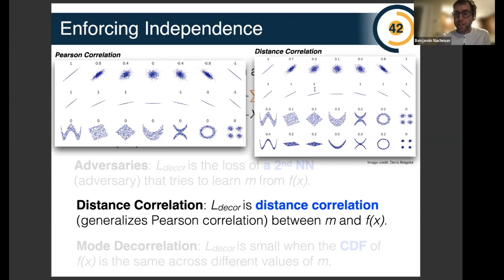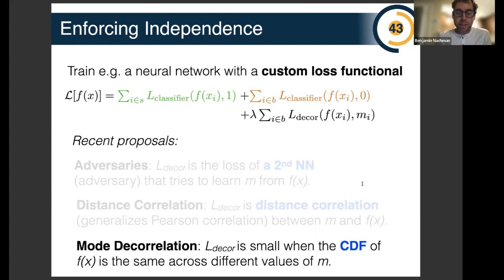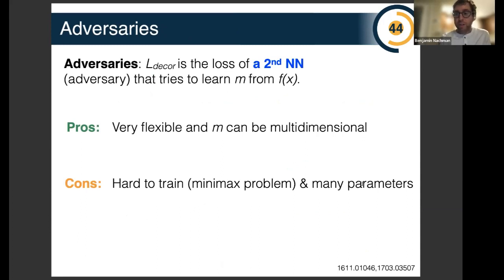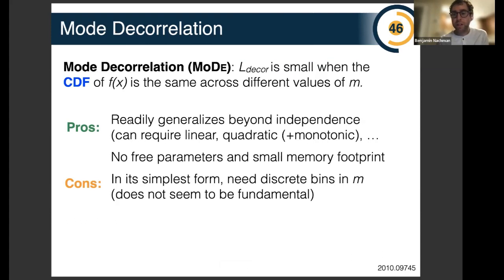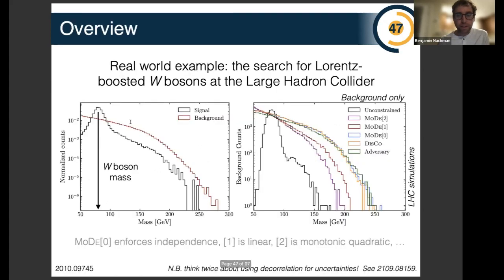There's a notion of distance correlation that generalizes the normal correlation, where it is zero if and only if the variables are actually independent. Another approach is to explicitly impose that the CDF of the neural network output is the same across different values of the resonant feature. These three approaches have pros and cons: adversaries are very flexible and easily multi-dimensional but have lots of parameters and are hard to train; distance correlation is convex and easier to train with no free parameters but can be computationally challenging; and the CDF approach generalizes beyond independence but requires binning and special discretization.